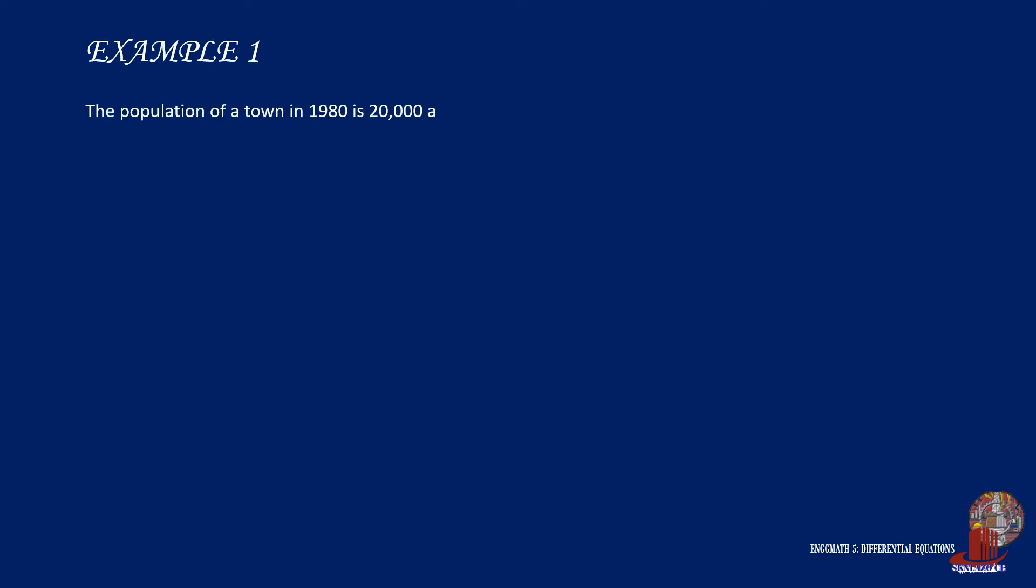Example 1. The population of a town in 1980 is 20,000 and it increased to 30,000 after 15 years. If the population grows exponentially, find the population in 2010. List the givens starting with the population in 1980 which is 20,000, and we will denote this as p0.